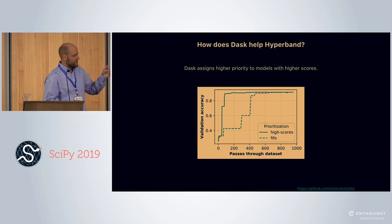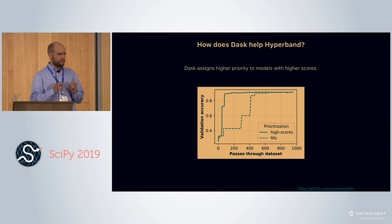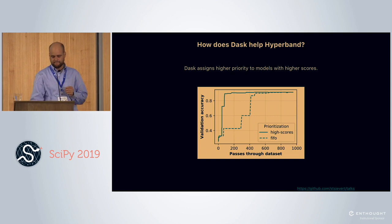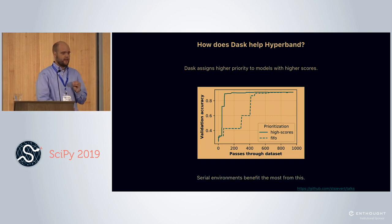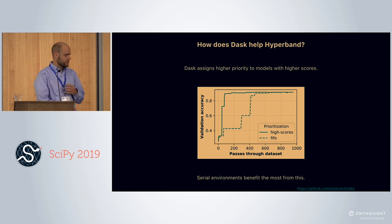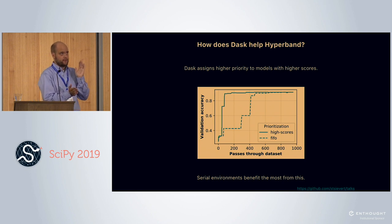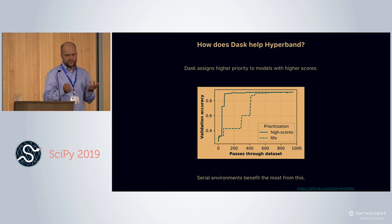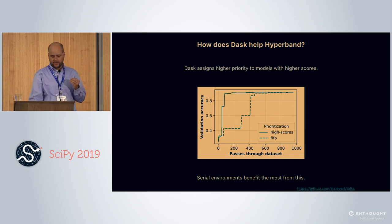I ran this plot seven times and chose a representative sample. Serial environments benefit the most from this, because that's when priority matters most. If you had an infinite number of workers, there'd be no sense of priority because every job could run at every time.